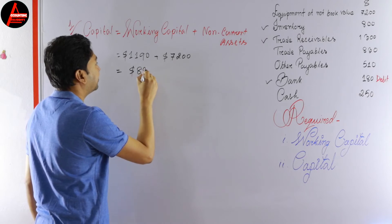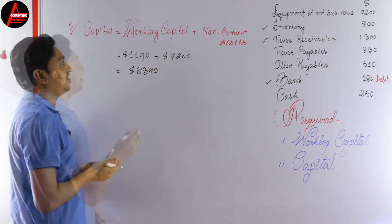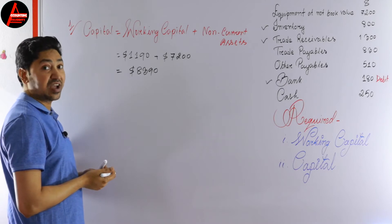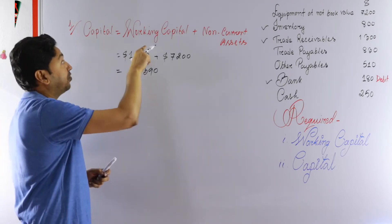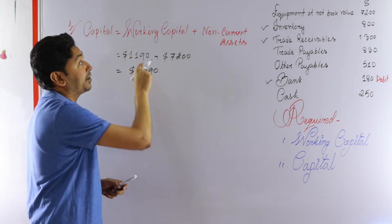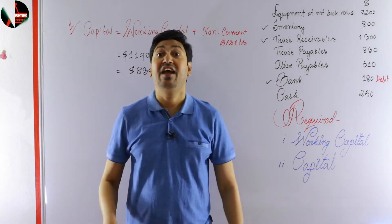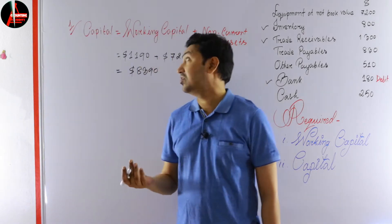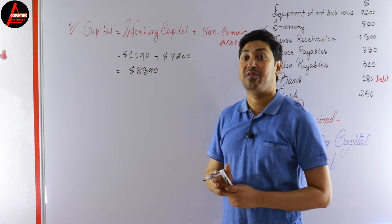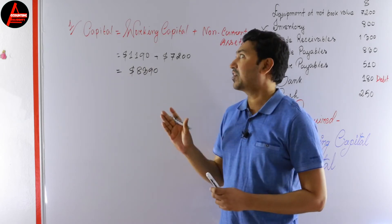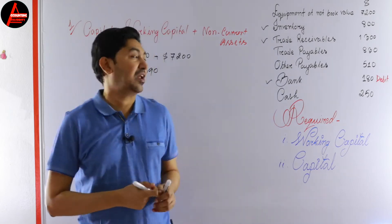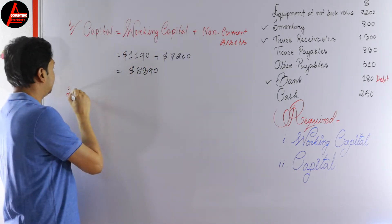If we add these two values — 1,190 and 7,200 — we get 8,390 dollars. Very simple and easy to calculate. You need to know this formula: Capital = Working Capital + Non-current Assets, and you also need to know how to calculate working capital.